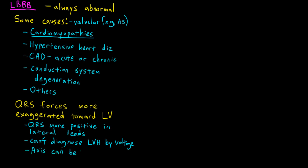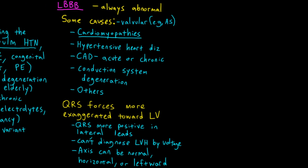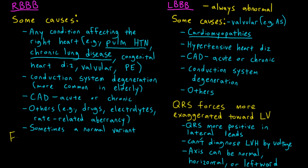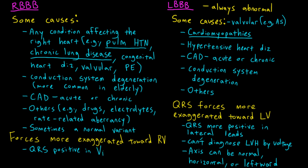In a left bundle branch block, the axis can be normal, horizontal, or leftward. Patients with right bundle branch block have QRS complexes that tend to be more positive in leads depicting the right ventricle, especially lead V1. Thus if you have a right bundle branch block, you really can't call something RVH using voltage criteria. With a right bundle branch block, the axis is usually pretty normal — it can be a little bit vertical, but it's not usually rightward.